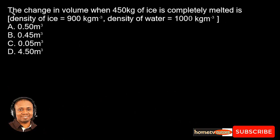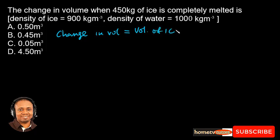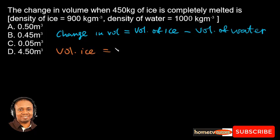This is question 13, JAMB Physics 2018. The question: what is the change in volume when 450 kg of ice is completely melted? The change in volume equals the volume of ice minus the volume of water. First we find the volume of ice: volume of ice equals mass divided by density of ice, which is 450 kg divided by 900 kg/m³, giving 0.5 m³.